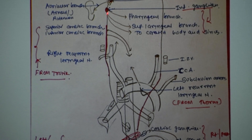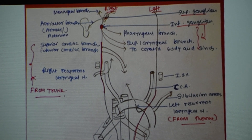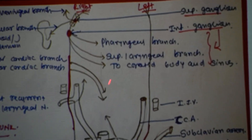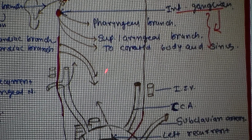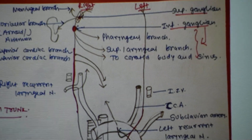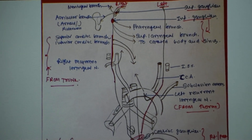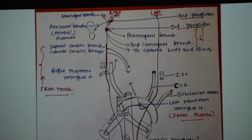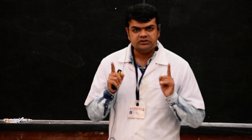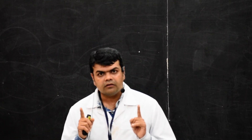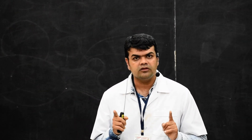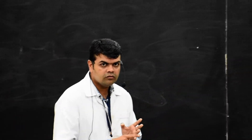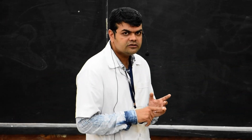Branches from the inferior ganglion include three branches: the pharyngeal branch, which forms the pharyngeal plexus; the laryngeal branch, the superior laryngeal nerve; and branches to the carotid body and carotid sinus. The pharyngeal plexus is an intercommunicating nerve plexus located on the middle constrictor muscle of the pharynx. It is formed mainly by the vagus nerve, in addition to the pharyngeal branch of the glossopharyngeal nerve.